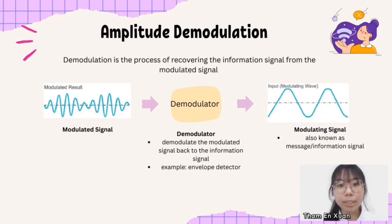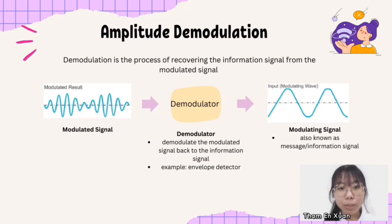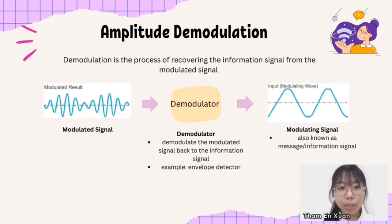An example of a demodulator is the Amplitude Detector. After demodulation, the output will be a modulating signal.